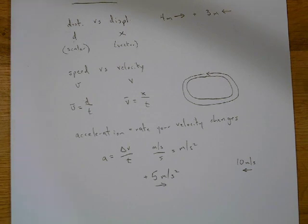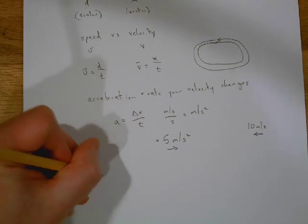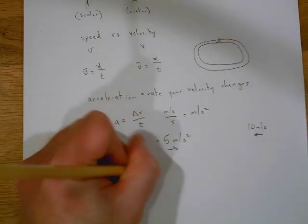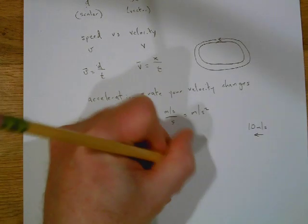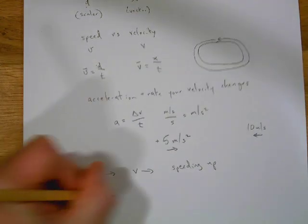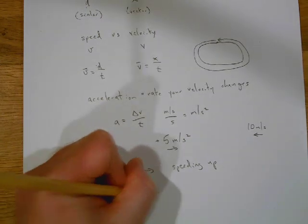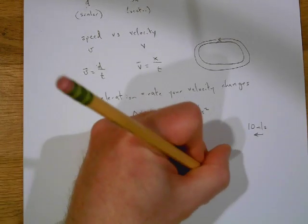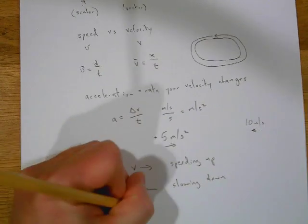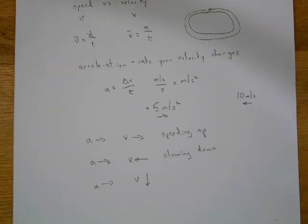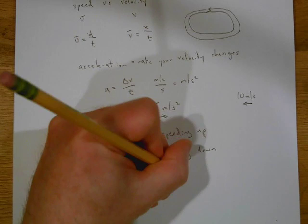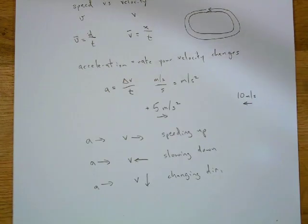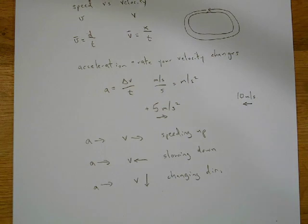After two seconds, you would be stopped, and so on. One of the super important things to remember — we typically did this with our fingers — if your acceleration and velocity are pointing the same way, you're speeding up. If your acceleration is pointing one way and your velocity is pointing the opposite way, you're slowing down. If they're perpendicular, you're changing direction. So to accelerate, you can speed up, slow down, or change your direction.